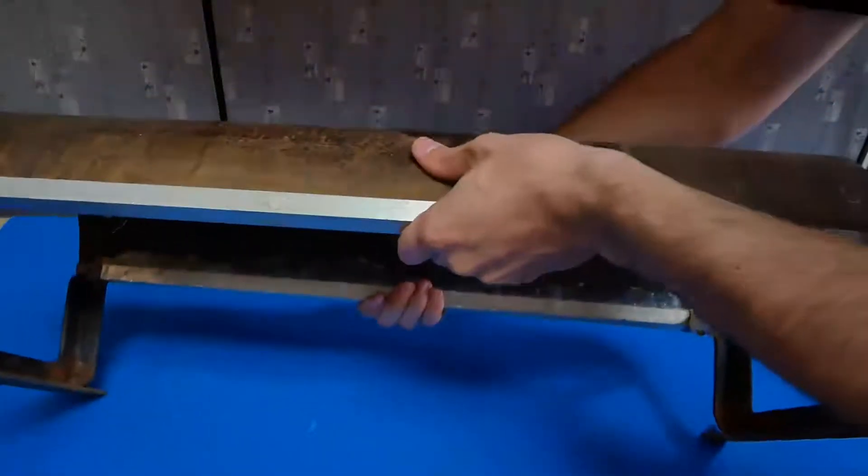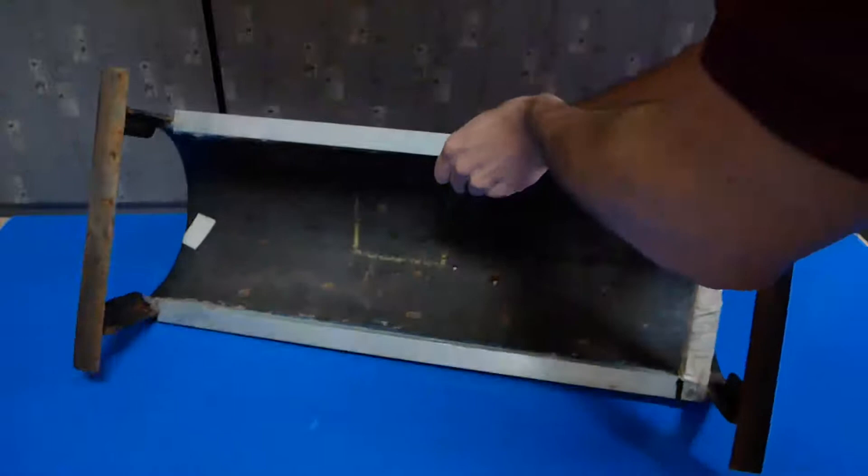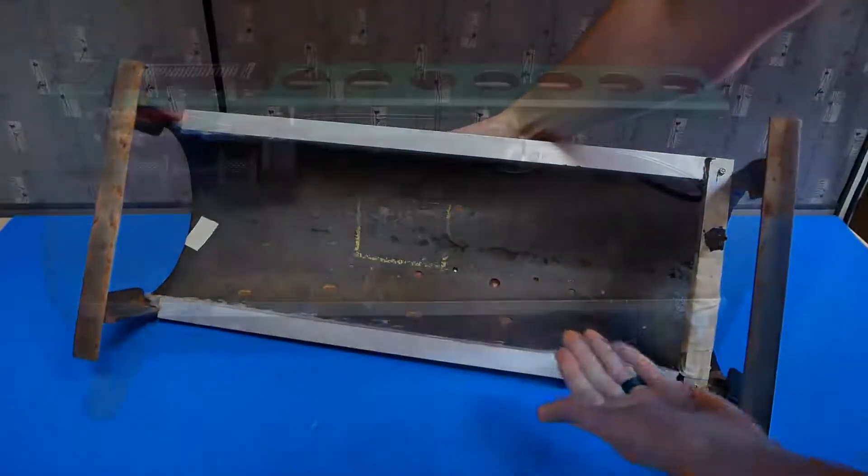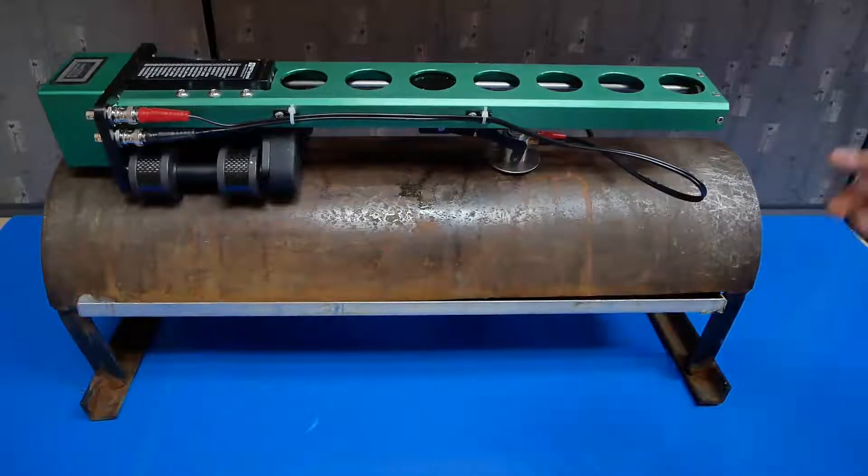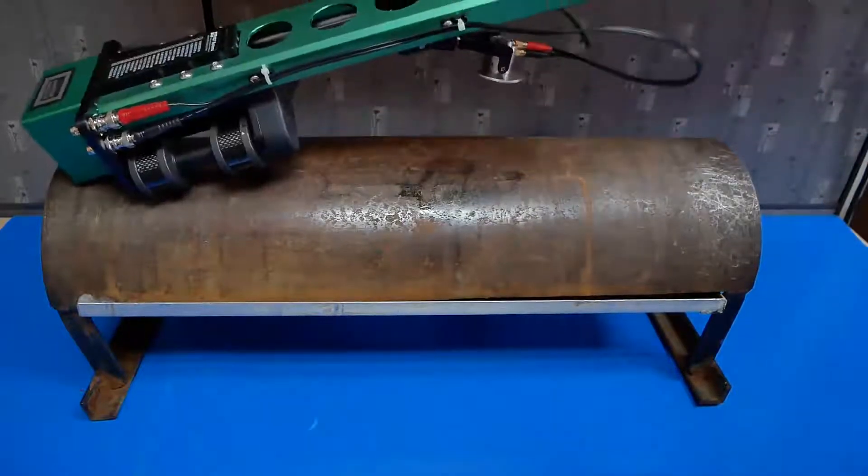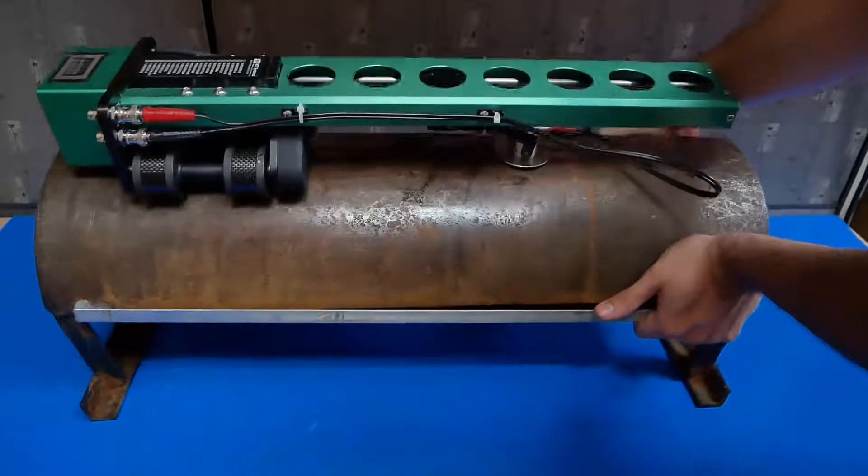The CIS is designed to measure corrosion on a huge variety of samples. The magnetic wheels cling to the circumference of your sample, and any pipe or tank 4 inches in diameter or larger can be inspected by the CIS.